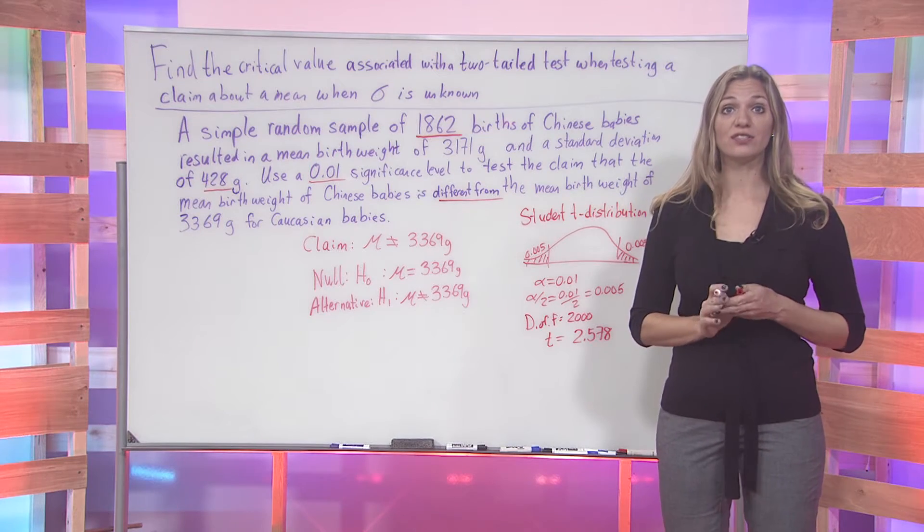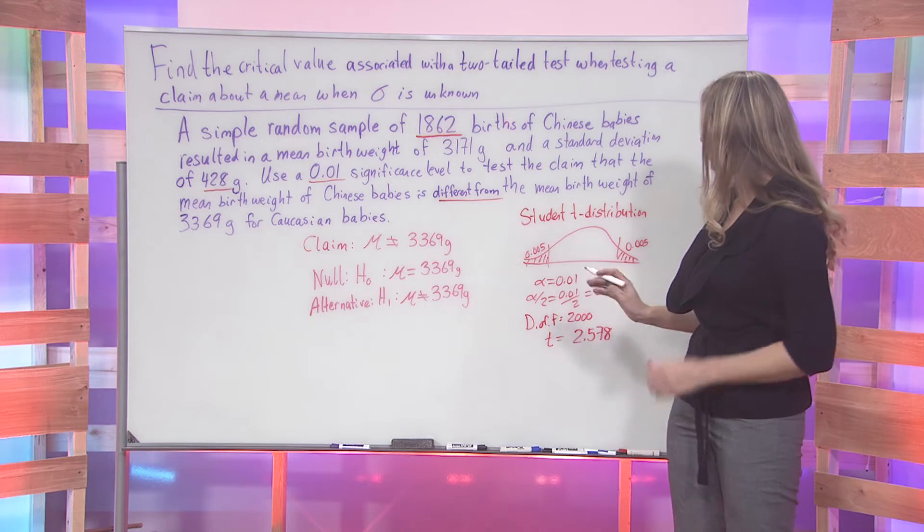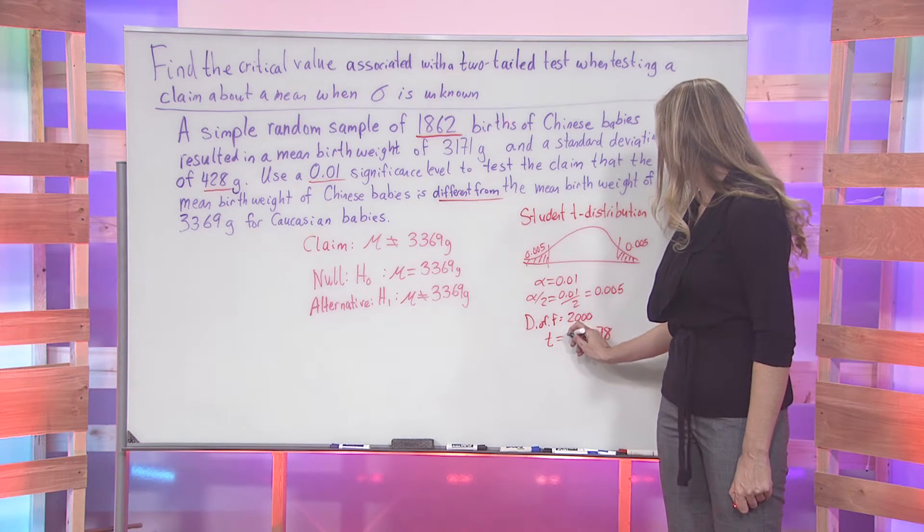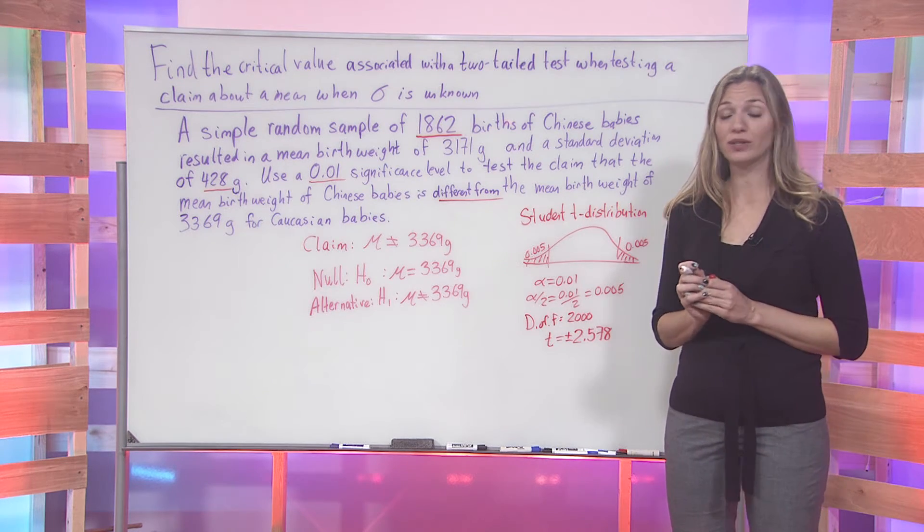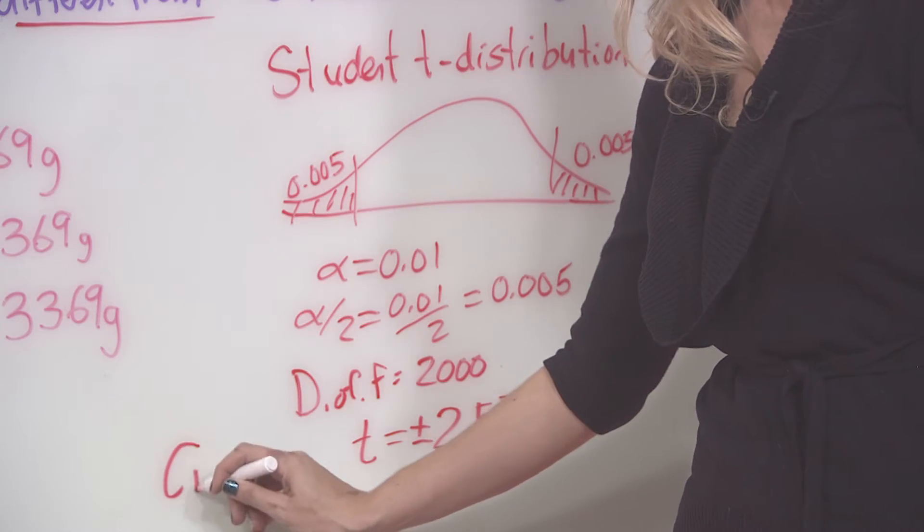However, since this is a two-tailed test, I should have two t-scores. So we want to make sure that we have a plus or minus to take into account both of these.